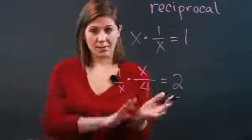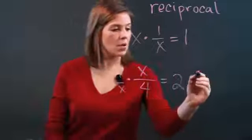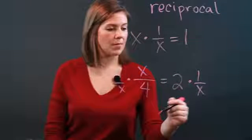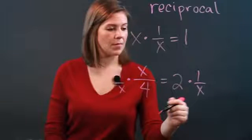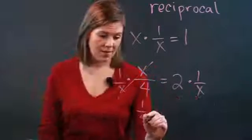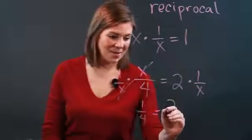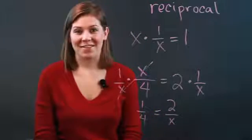1 over x, and of course, if we multiply it on one side of the equation, we must make it equal. Then what we get is that the x's over here cancel out, but our x ends up on the denominator on the other side.